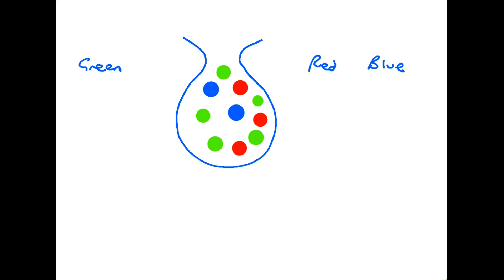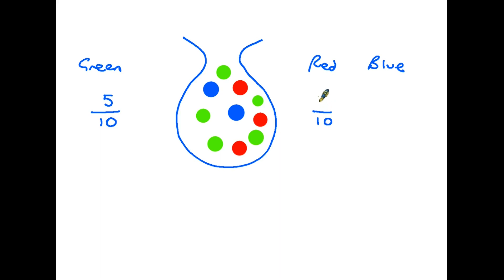Here we have a bag full of coloured counters — green ones, red ones, and blue ones. We're going to put a hand into the bag without looking and completely at random draw out one counter. In the bag there are 10 counters altogether. Five of them are green, so there's a five in ten chance of drawing a green counter. Three are red, giving a probability of 3 out of 10. And there are two blue counters.